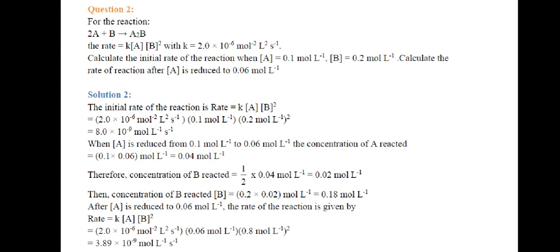When [A] is reduced from 0.1 to 0.06 mol·L⁻¹, the change in A is 0.1 − 0.06 = 0.04 mol·L⁻¹. The change in concentration of B is half of this (because of the stoichiometric coefficient 2A), so the decrease in B = ½ × 0.04 = 0.02 mol·L⁻¹. Therefore, new [B] = 0.2 − 0.02 = 0.18 mol·L⁻¹.